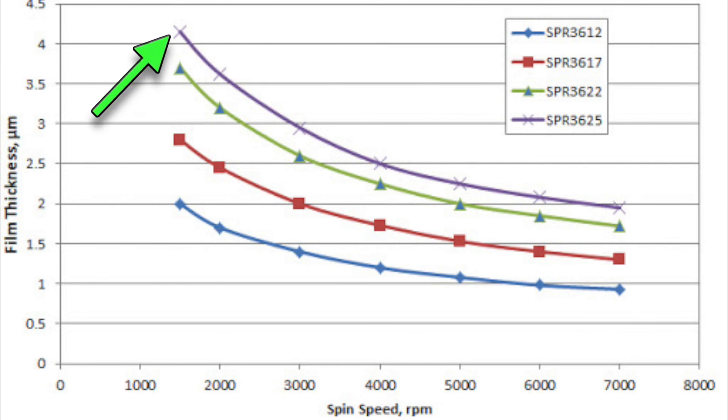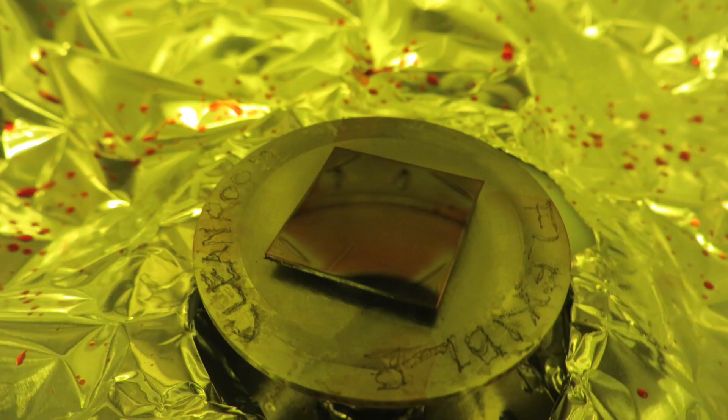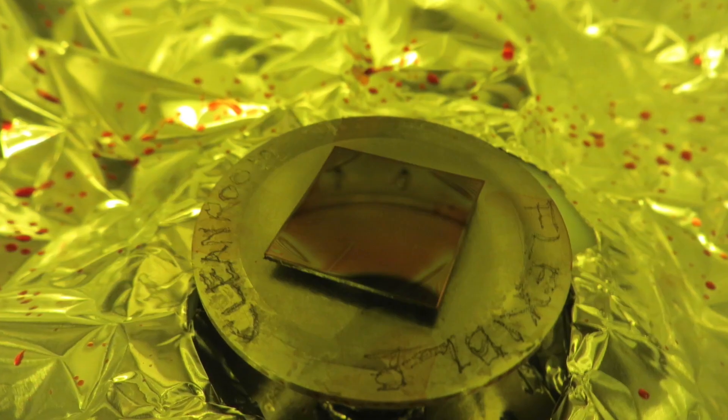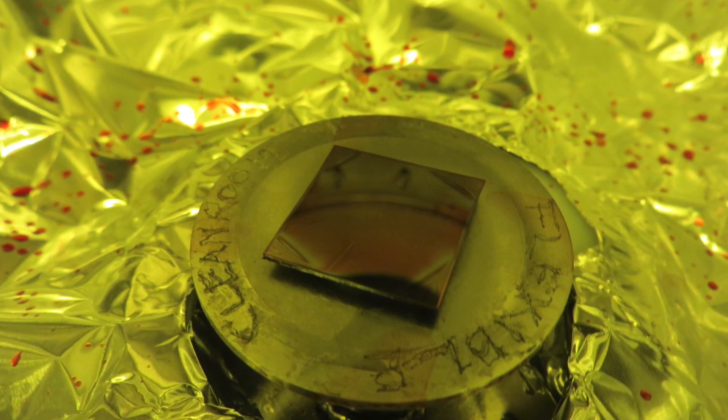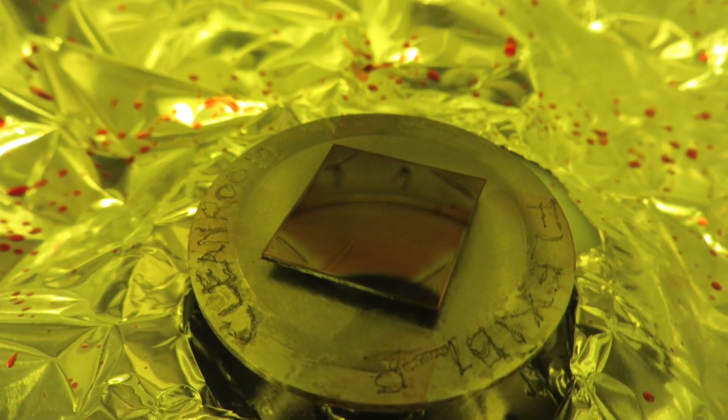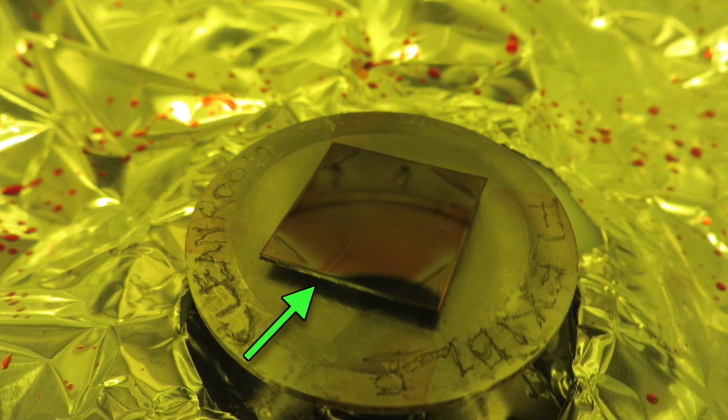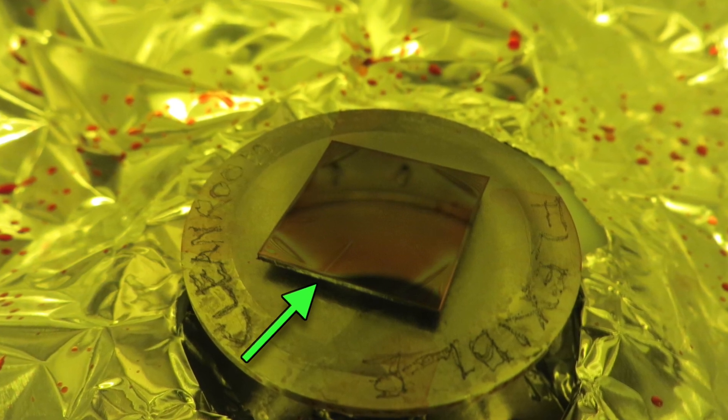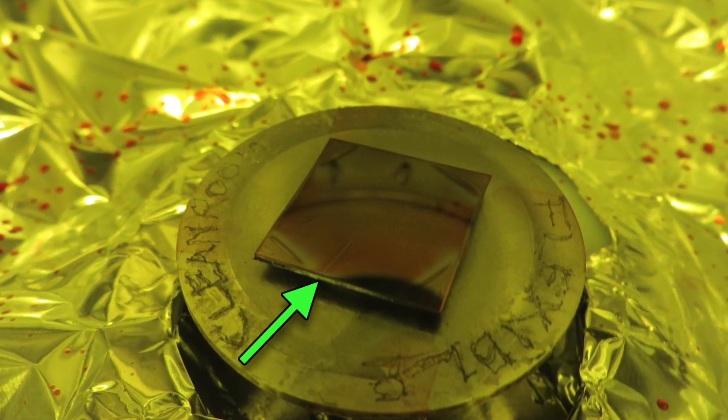Bubbles in the resist will also cause streaks. Squeeze out excess bubbles from the pipette before depositing the resist. If you do see a bubble in the resist after dispensing it, you can use the pipette to suck away the bubble or to scoot the bubble towards the edge of the wafer right before spinning.